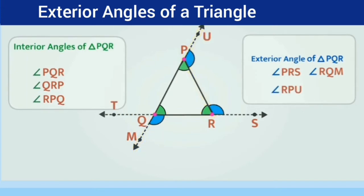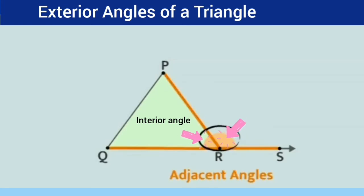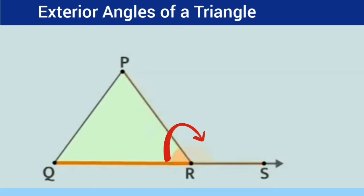In triangle PQR, angle PRS is an exterior angle. Angle PRQ is an interior angle and it is adjacent to angle PRS. Then what about the other two angles with respect to the exterior angle?